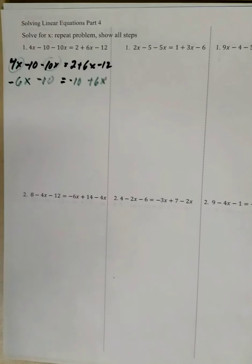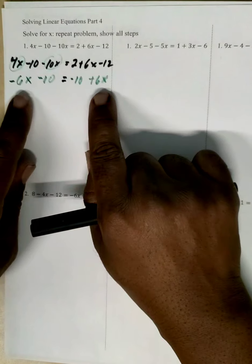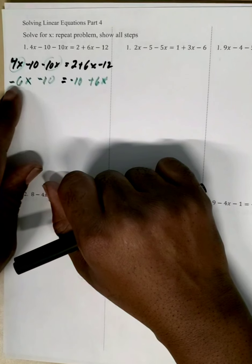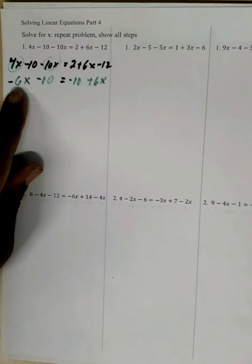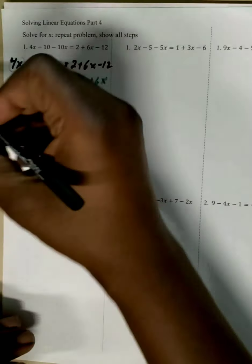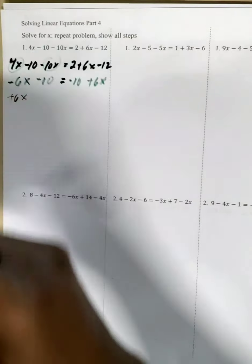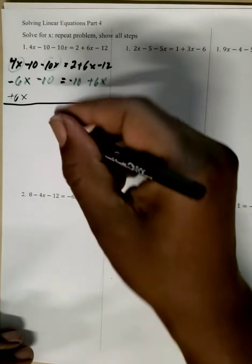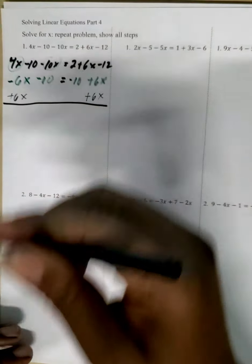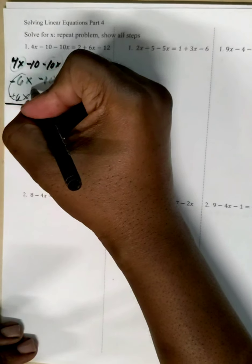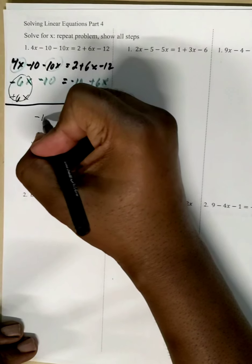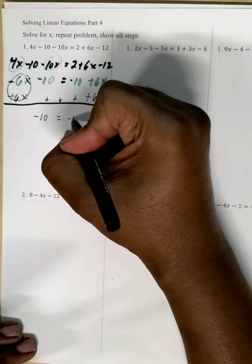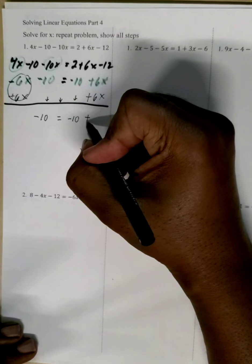From here, we have x's on both sides — a negative 6x and a positive 6x. The weaker of the two is the negative 6x on the left side, so we're going to get rid of it. To get rid of negative 6x, we add 6x, and what we do to one side we do to the other, so we add positive 6x on the other side. The combination of these two makes zero. The negative 10 comes down, the equals comes down, the negative 10 comes down, and same signs add so we get 12x.